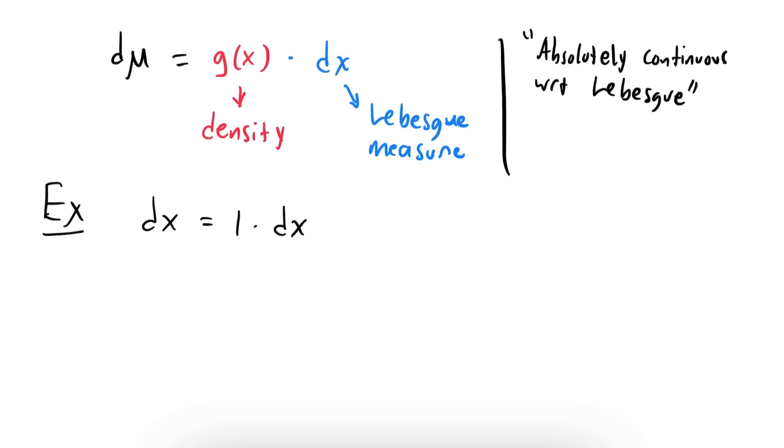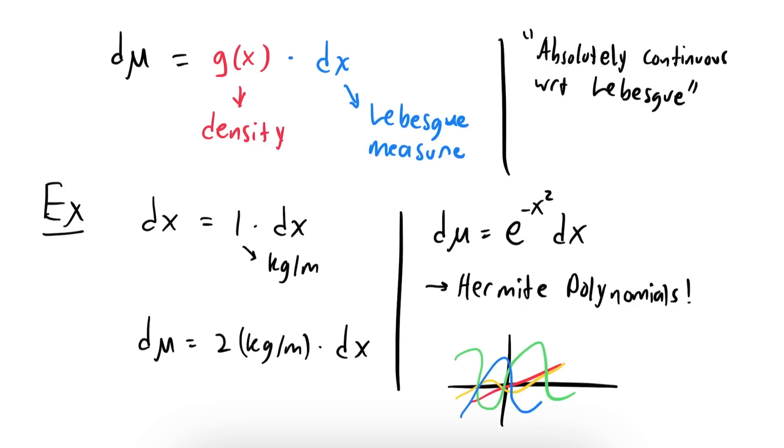When we said the Lebesgue measure assigns a uniform density of one kilogram per meter to the real numbers, we were essentially saying that dm is equal to one kilogram per meter times dx. If we were to assign a uniform density of two kilograms per meter, our new measure dμ would equal two times dx. And we can make this density depend on x, too. For example, we could define a measure dμ given by e^(-x²) dx, and it turns out that this measure plays an important role in defining Hermite polynomials.